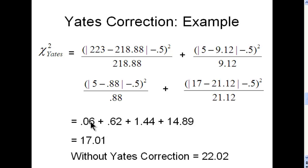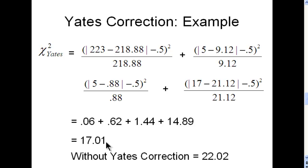So then we sum those absolute differences that are divided by the expected frequencies, and we get a value of 14.89 for that cell. After we sum across all four cells, we get a value of 17.01. So that's a Pearson chi-square with Yates' correction. And I'll point out that without the Yates' correction, you get a chi-square value of 22.02. So that's a pretty big difference.